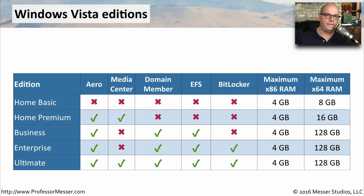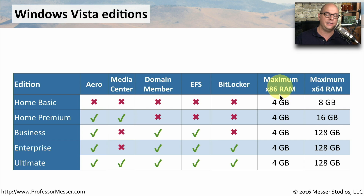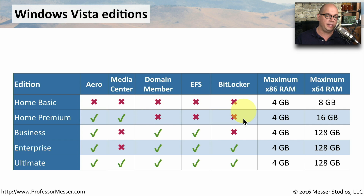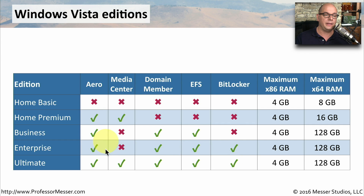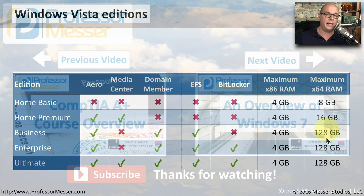Here's a summary of some of the features in the different editions of Windows Vista. Home Basic doesn't support very much and is limited to 4 gigabytes of RAM on a 32-bit system, or 8 gigabytes on a 64-bit system. Home Premium includes Aero Graphics and Media Center but lacks advanced business features, with a maximum of 16 gigabytes on a 64-bit system. Business, Enterprise, and Ultimate have greatly improved capabilities, with 64-bit memory support up to 128 gigabytes per system.